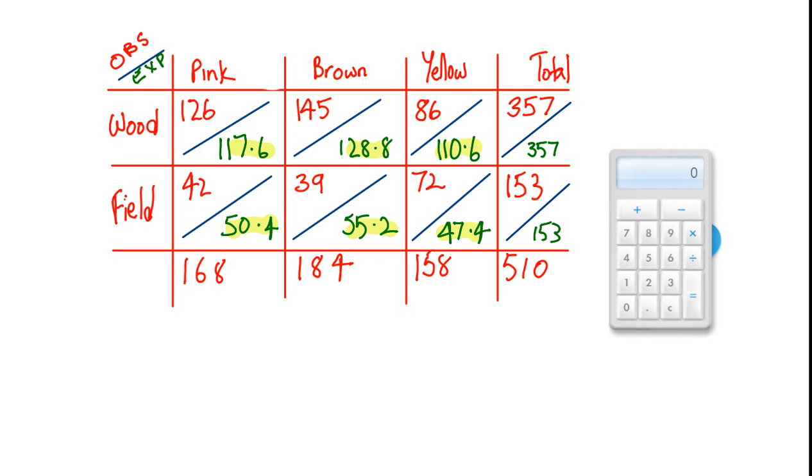This is the number of snails expected in each color pattern if the overall proportions are the same. Now, we need to work out the chi-squared value to compare the observed and expected. So as always, we've got the sum of observed minus expected squared divided by expected. So for the first one, it's 126 minus 117.6 squared divided by 117.6. So over here, 126 minus 117.6 equals times divided by 117.6 is a chi-squared value of 0.60.